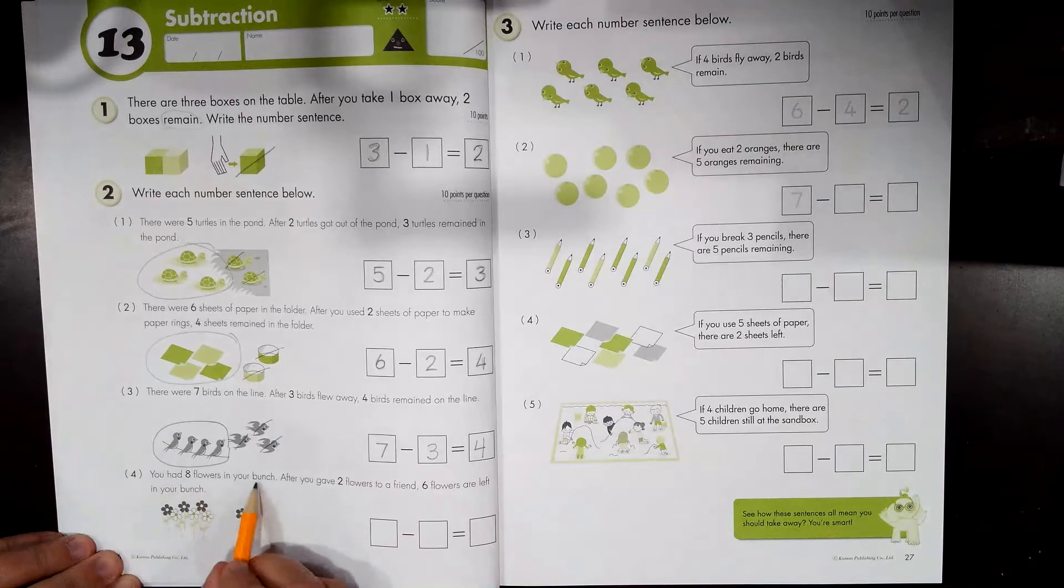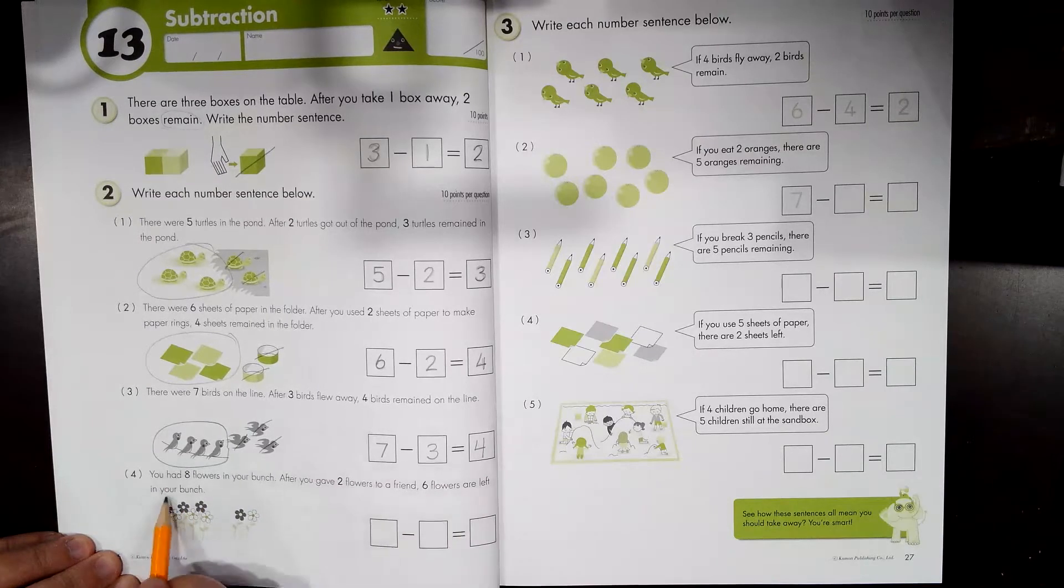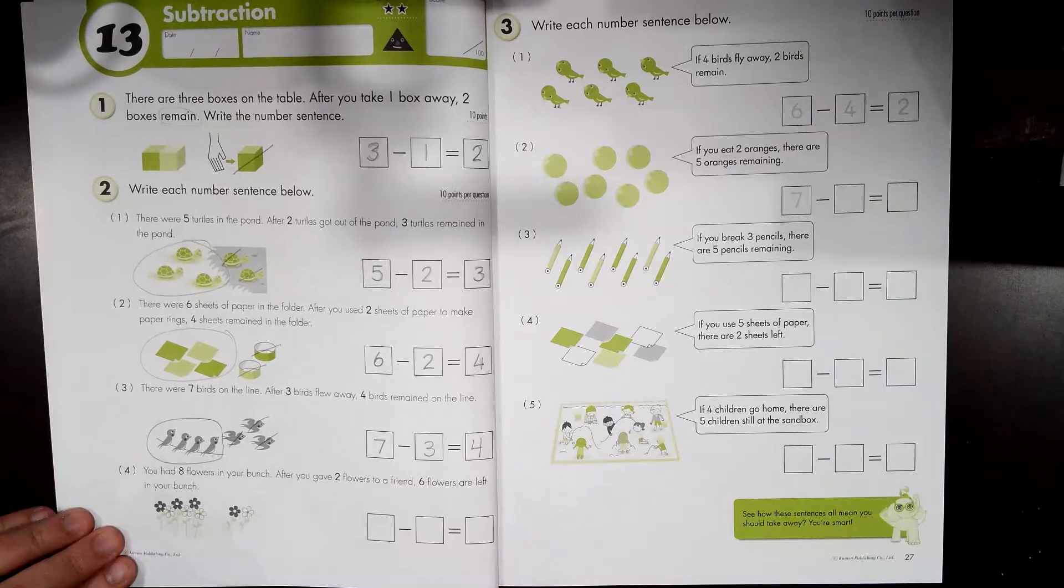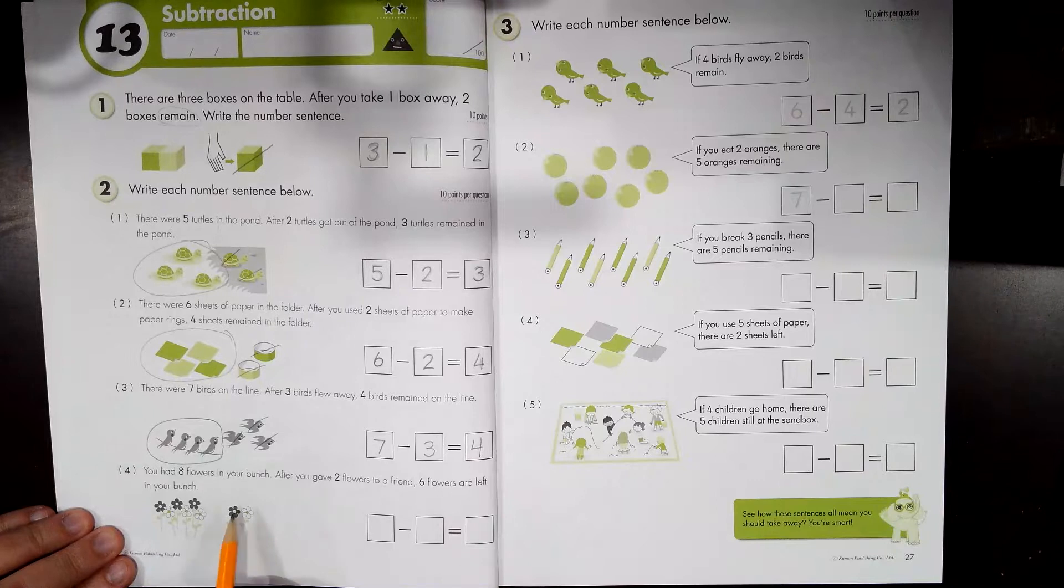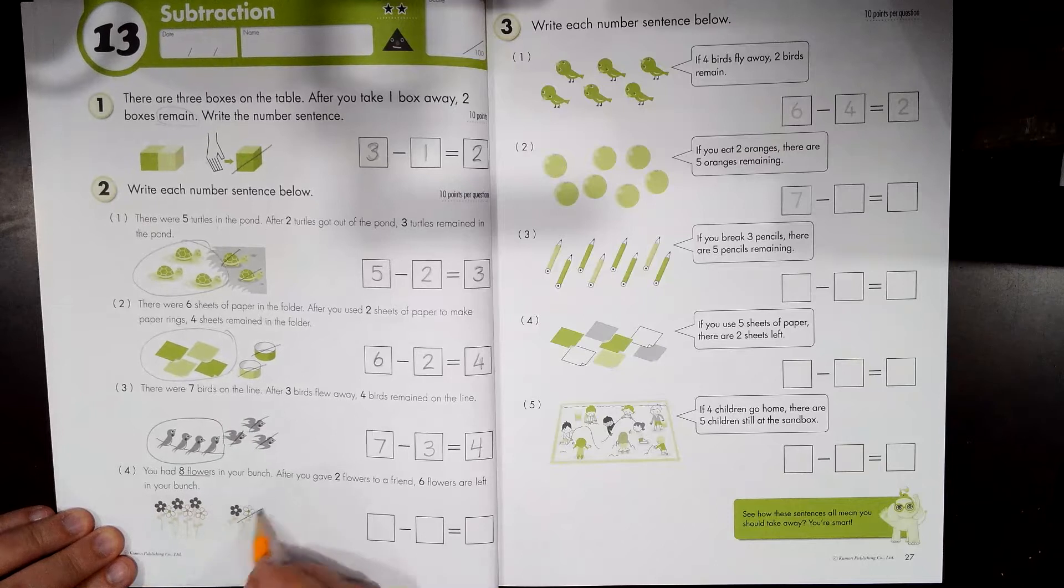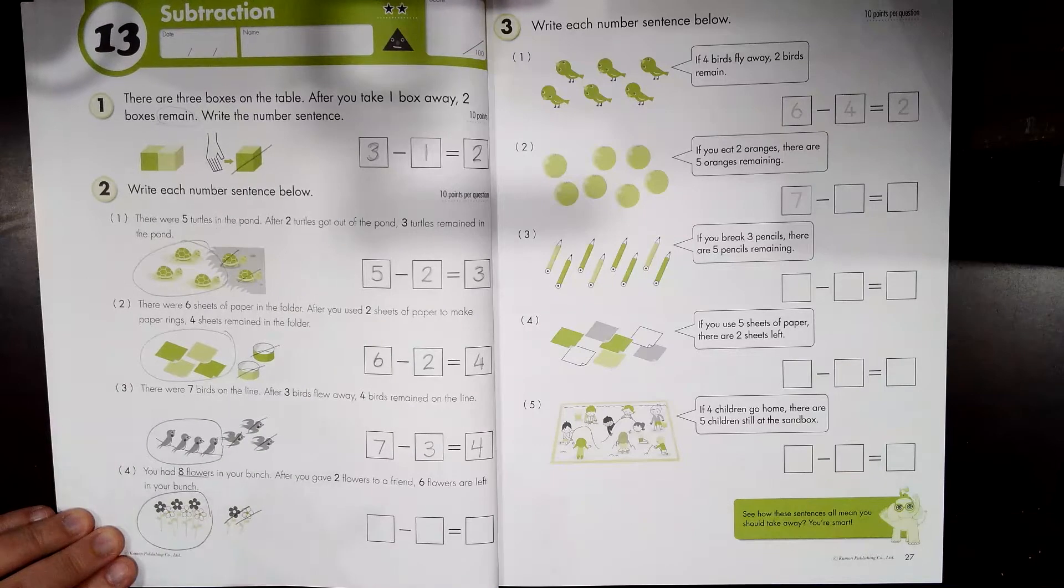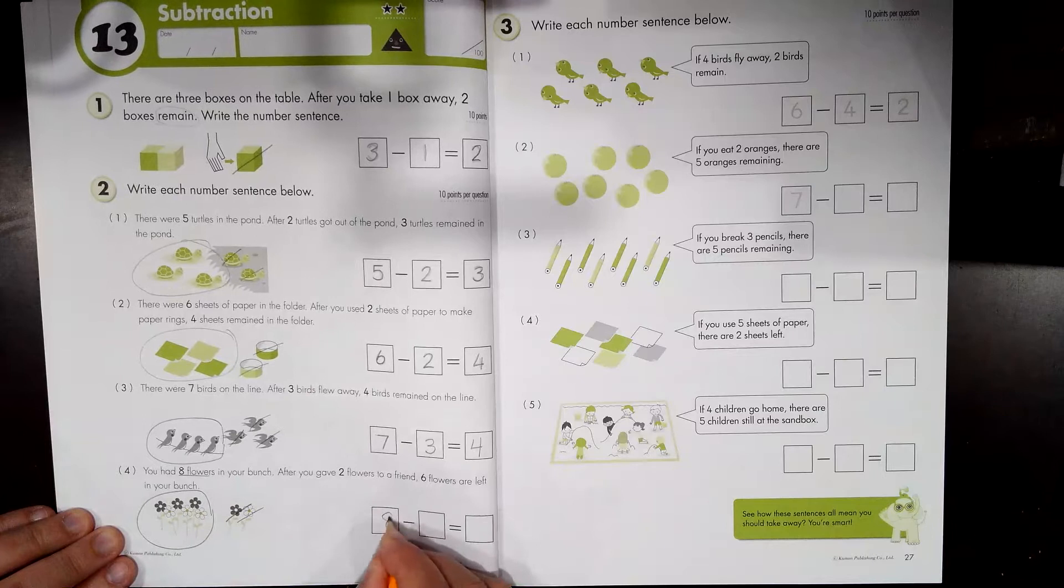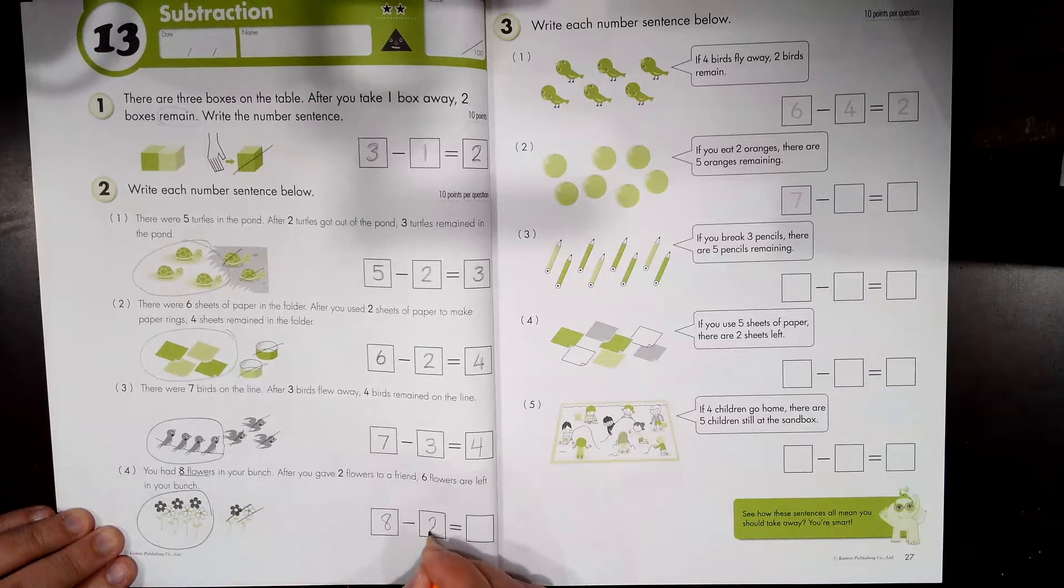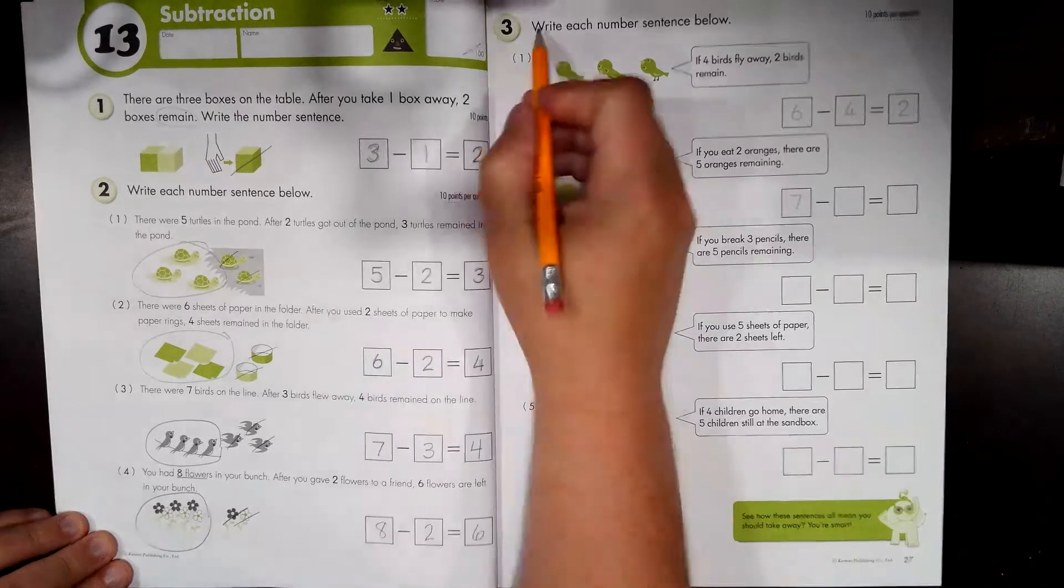Let's try number four. You had eight flowers in your bunch. After you gave two flowers to a friend, six flowers are left in your bunch. So what are you supposed to do? You have eight flowers all together. Six flowers remain. So you have eight flowers. Two were given to a friend. Six remain. All right, let's go on to number three.